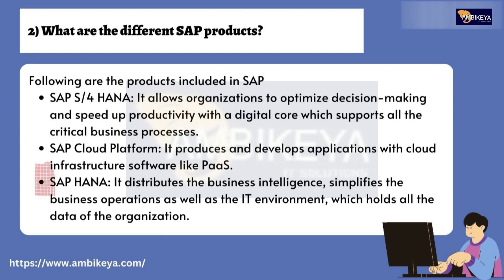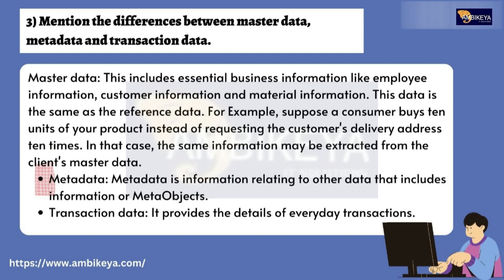Question number two: What are the different SAP products? The following products are included in SAP. SAP S/4HANA — it allows organizations to optimize decision-making and speed up productivity with a digital core that supports all critical business processes. SAP Cloud Platform — it produces and develops applications with cloud infrastructure software like PaaS. SAP HANA — it distributes business intelligence and simplifies business operations as well as the IT environment, holding all the organization's data.